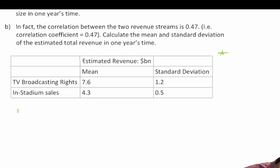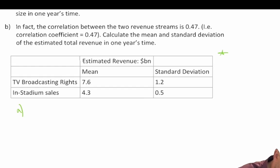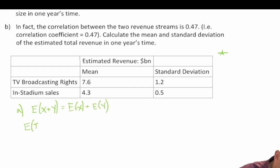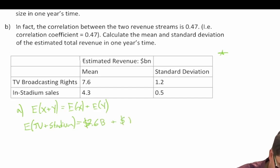So let's go ahead and do question A. We're asked to find the mean, or the expected value, and the standard deviation. The expected value of X plus Y is equal to the expected value of X plus the expected value of Y. So the expected value of TV plus Stadium equals 7.6 billion plus 4.3 billion, which gives us 11.9 billion dollars.